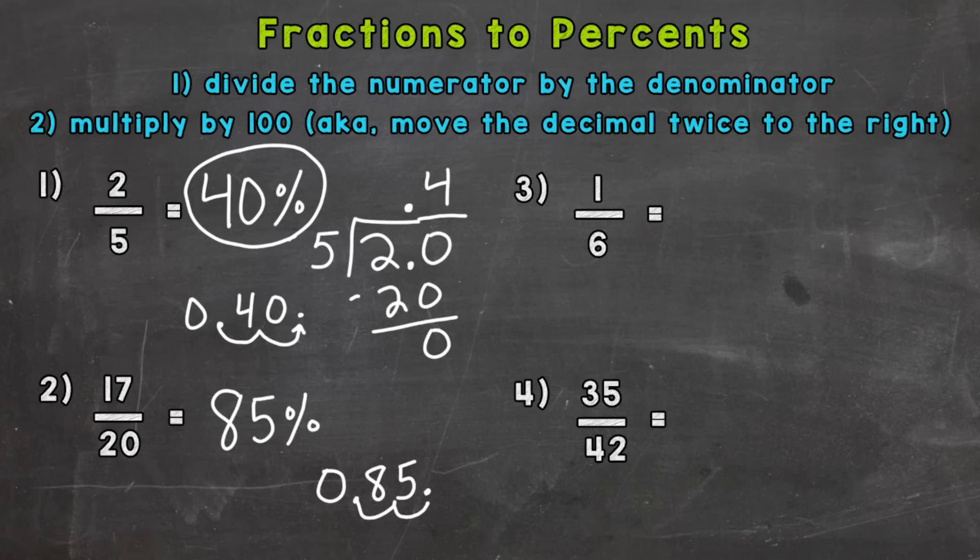Number three we have 1/6, and this one's a unique problem because we get a repeating decimal when we divide 1 by 6. We get an answer of 0.16̄. So they go on forever that way. But we follow the same steps; it's just how you want to represent your answer. So let's multiply by 100, move the decimal twice, and we get 16.6̄. So we could put a bar above that 6 to show it repeats, and that is percent.